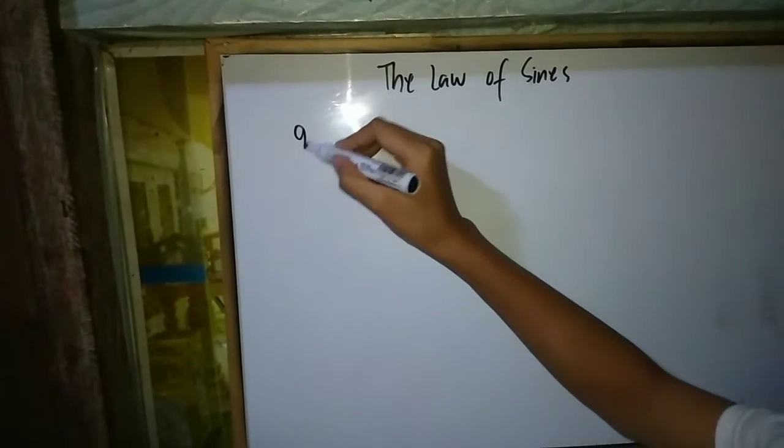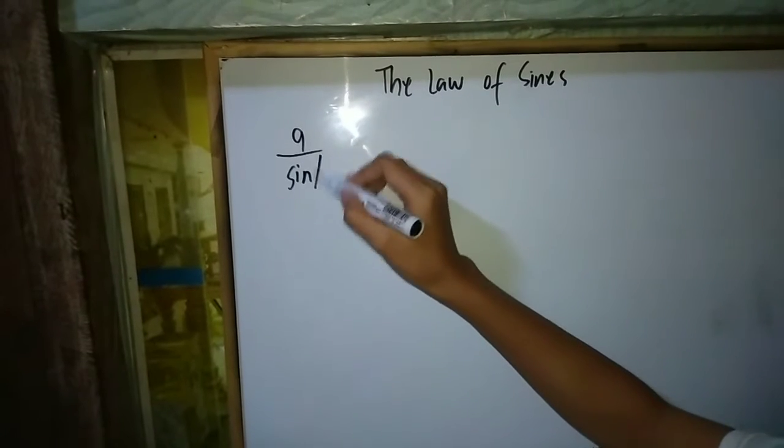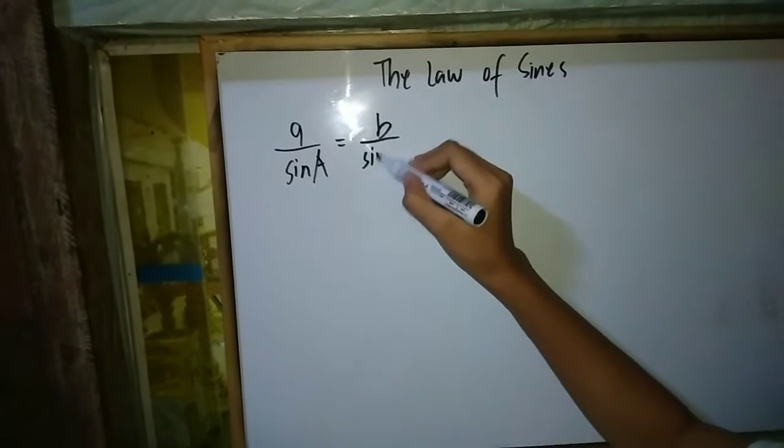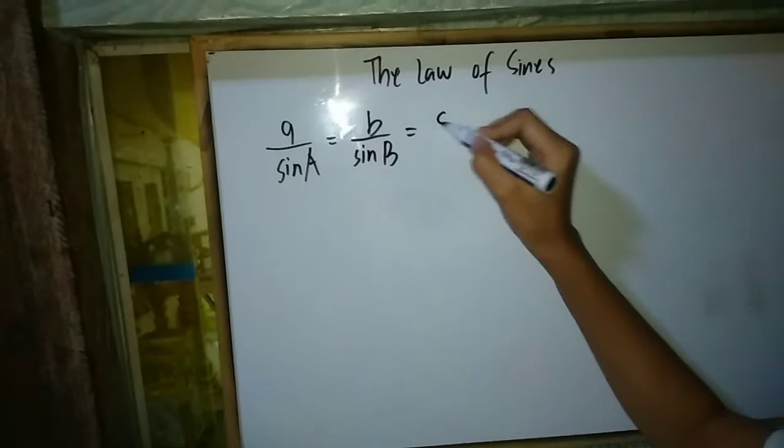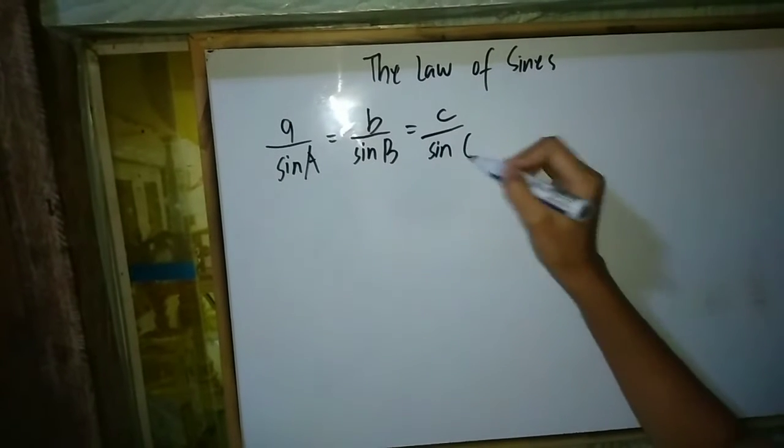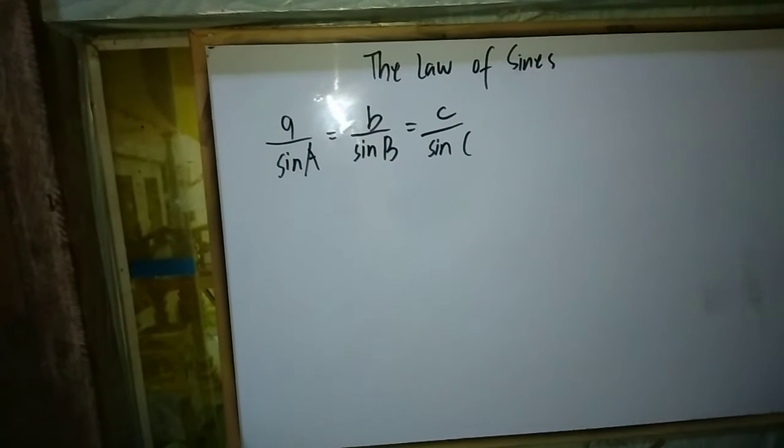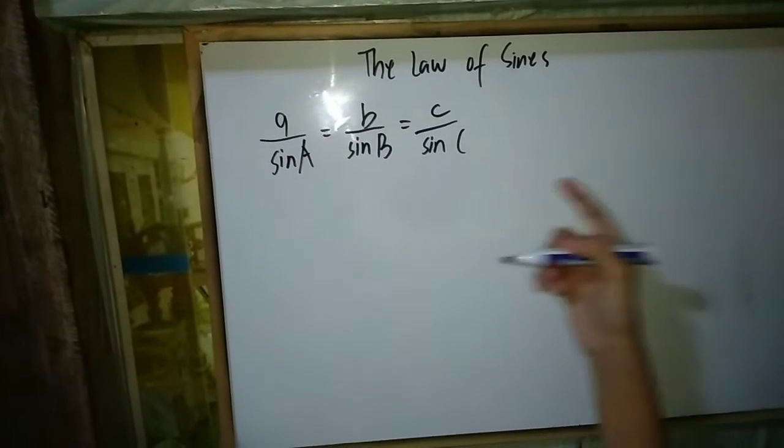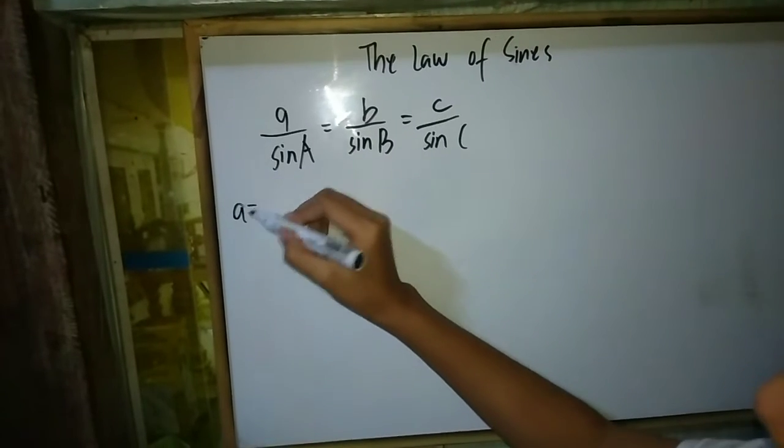Our topic for today is all about the law of sines. We have the formula of the law of sines, which is a over sin A equals b over sin B and equals c over sin C. Let's have an example using this formula. We have a is 5.